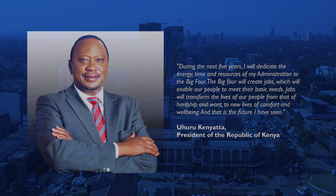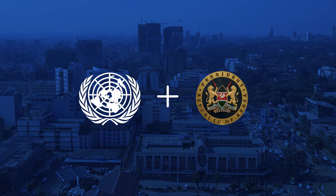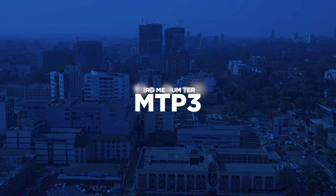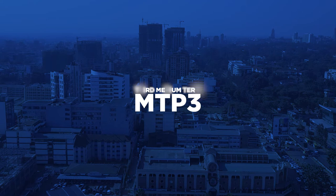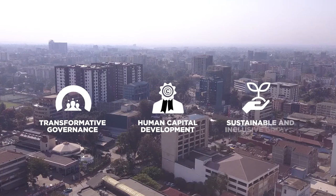Through this framework, the UN in Kenya will in the next five years support the Government of Kenya towards the realization of Kenya's Vision 2030, the Medium-Term Plan 3, the Government of Kenya's Big Four transformative agenda, and the Sustainable Development Goals. This support will help the government to accelerate the country's economic transformation, contributing to an empowered, productive and healthy nation.